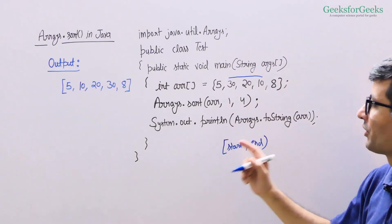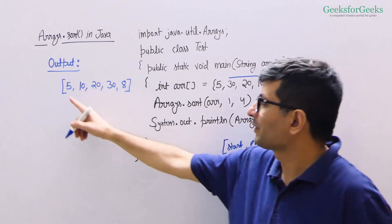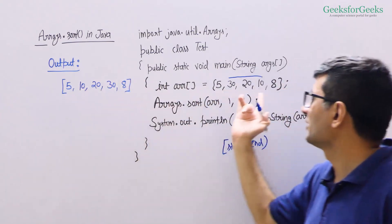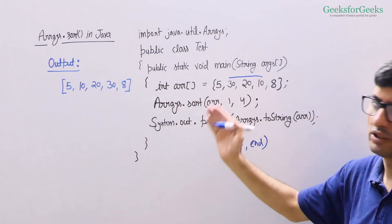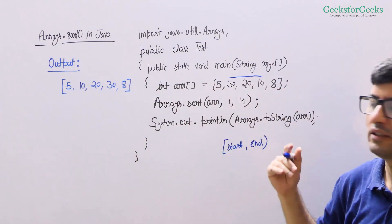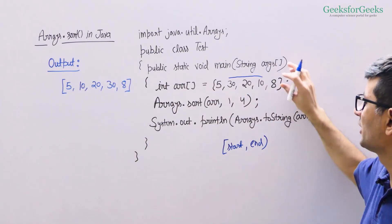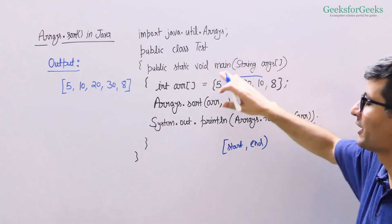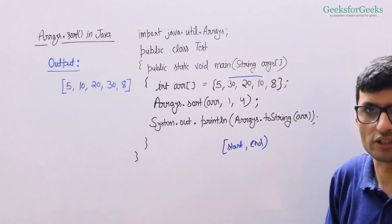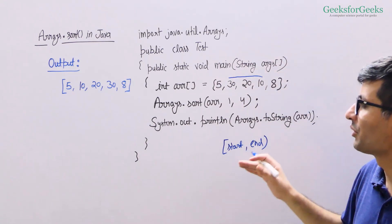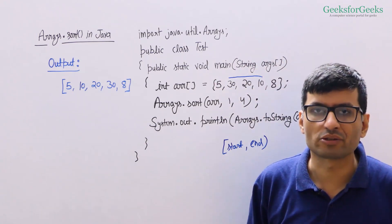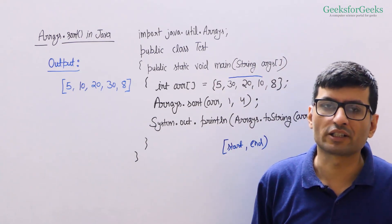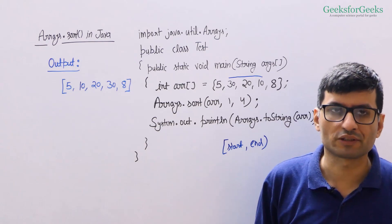After sorting the sub-array, we get 5 as the first element (untouched), then the three sorted elements 10, 20, 30, and then 8. The remaining elements outside the specified range are not touched. So we can sort a sub-array using the Arrays.sort function.